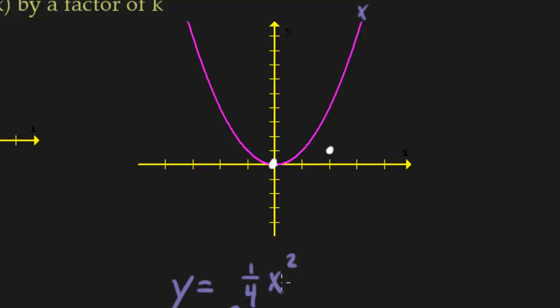If you did 4, like plug in x equals 4, you get 4 squared is 16, then divide by 4 is 4. So we're going to go (4,4).